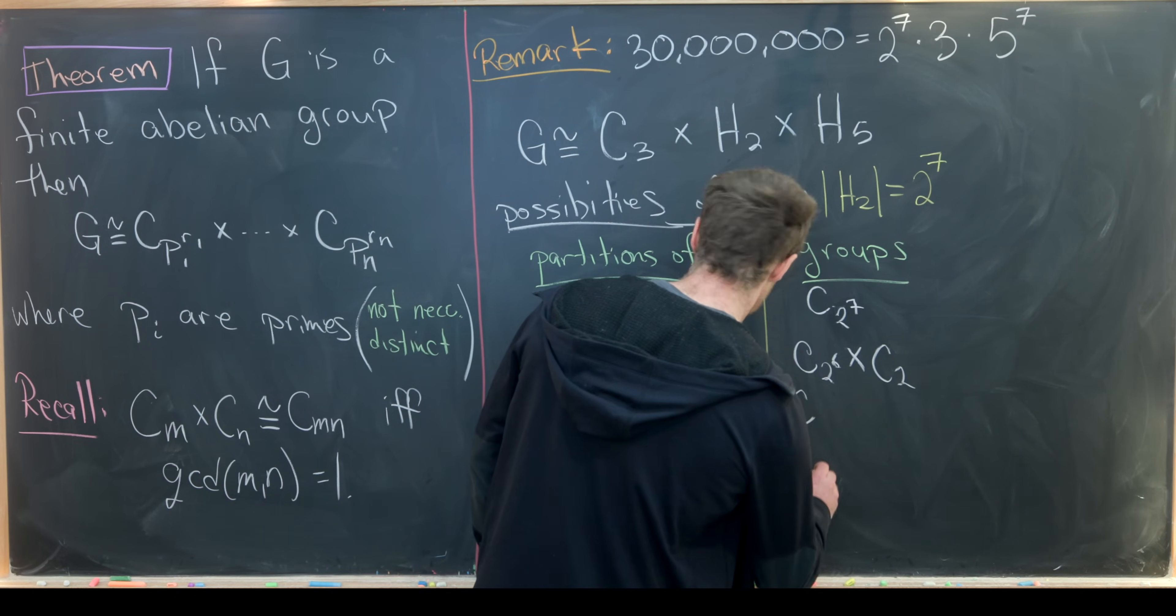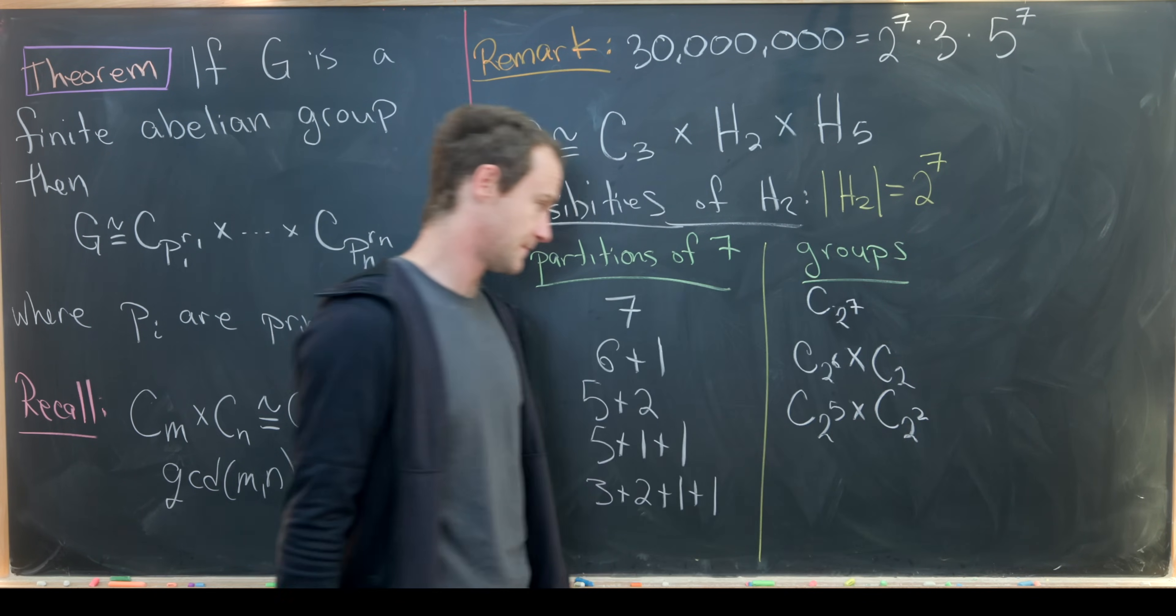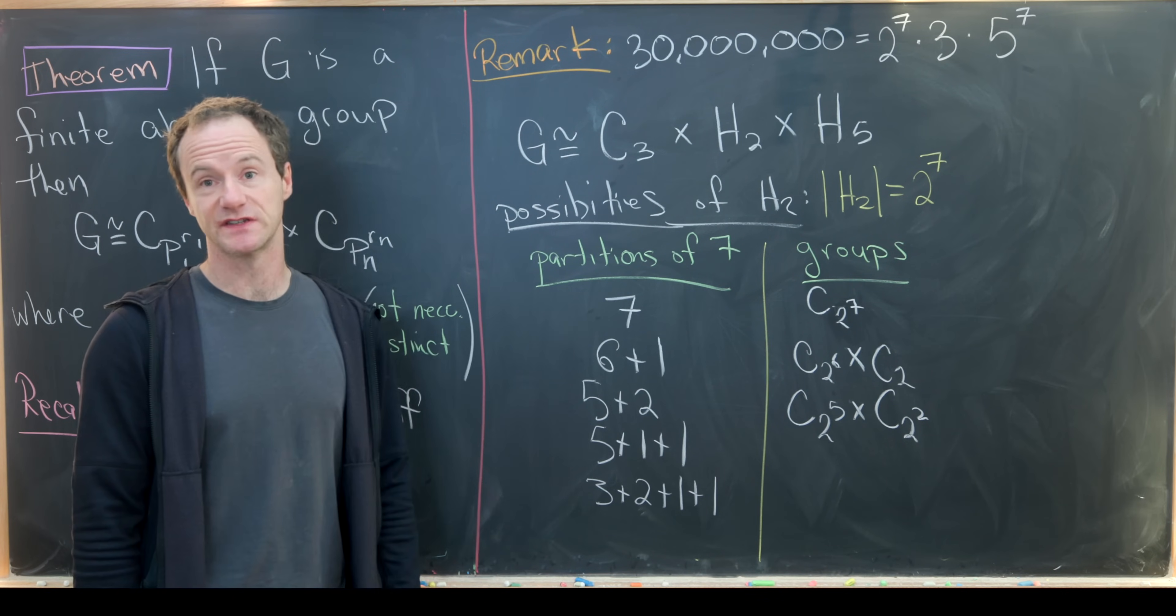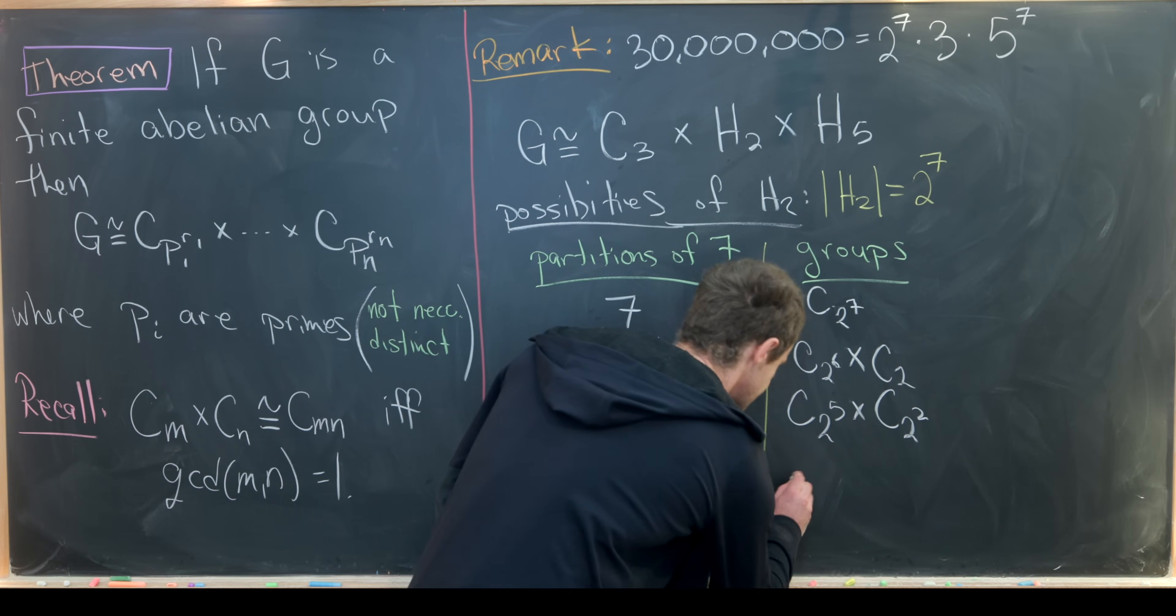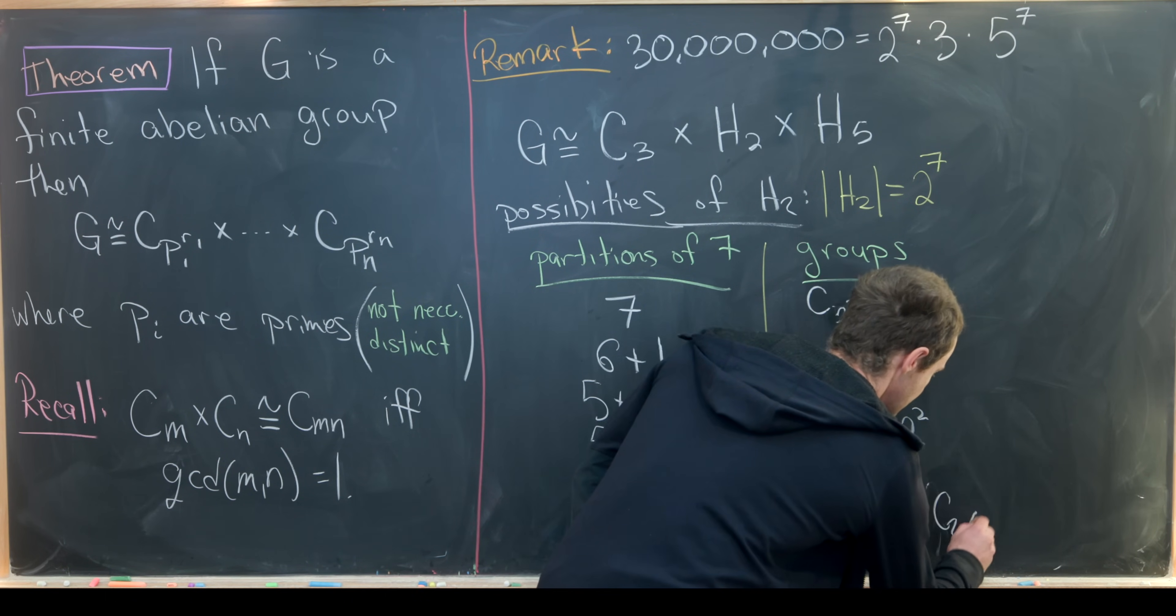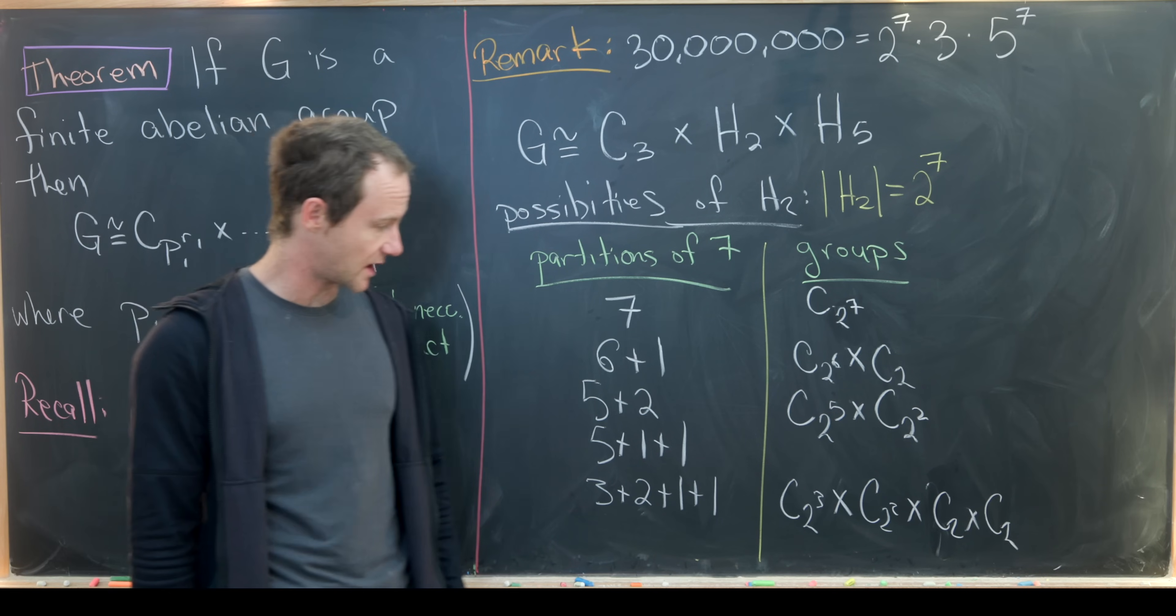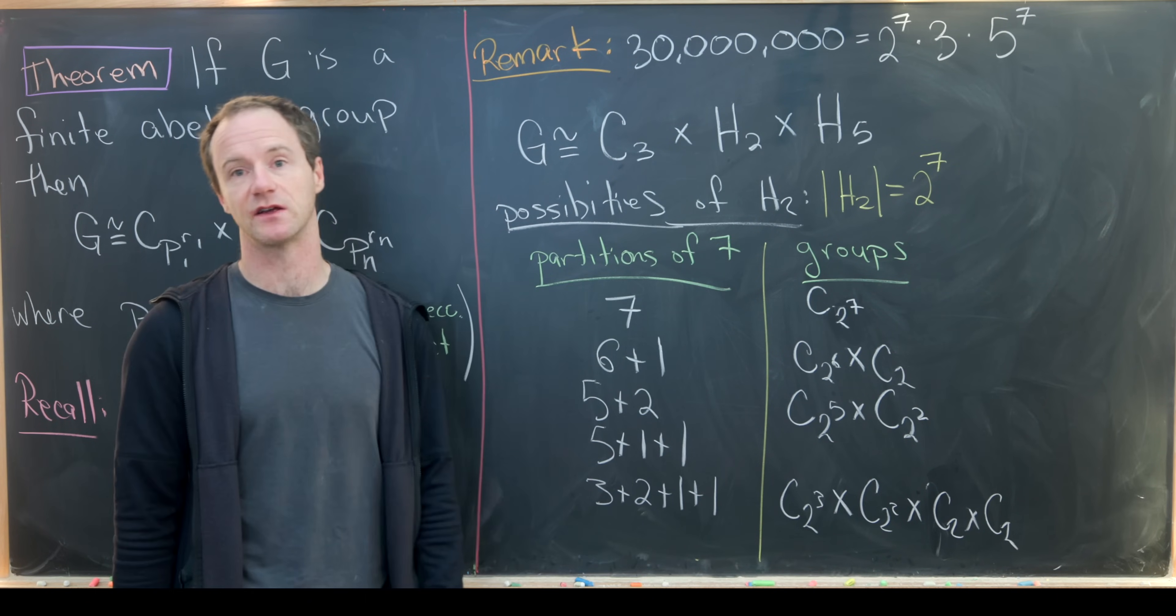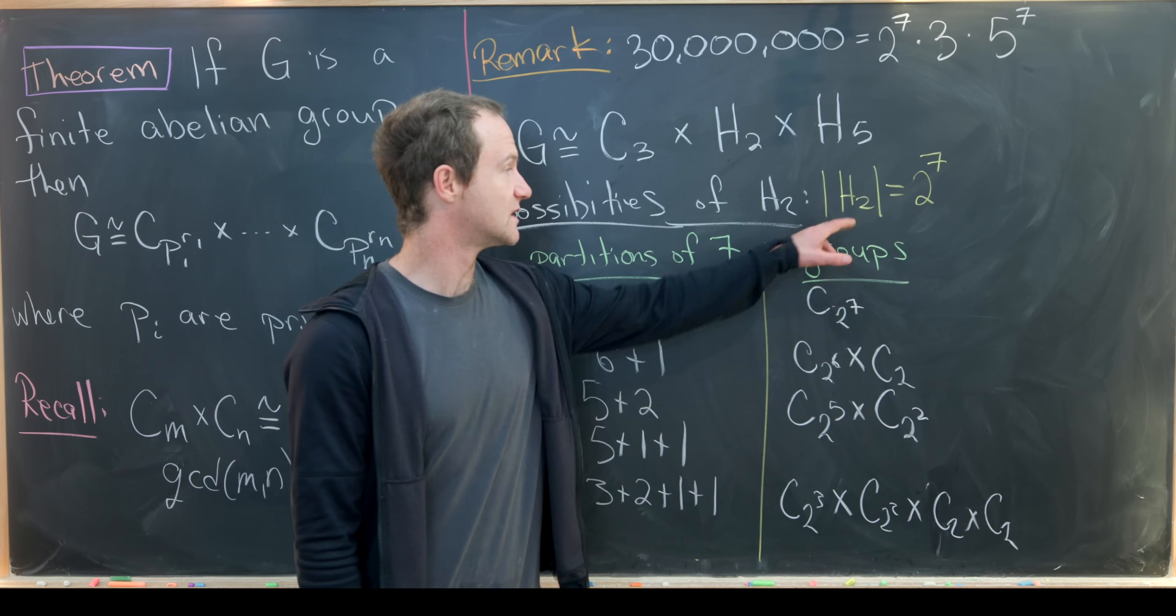Let's look at 5 plus 2. That'll be C of 2 to the 5th cross C of 2 squared. Now what about this one? This would be C 2 cubed cross C 2 squared cross C 2 cross C 2. We have the symmetries of an octagon multiplied by the symmetries of a square multiplied by the symmetries of two rectangles. So those are all of the possibilities for H2.